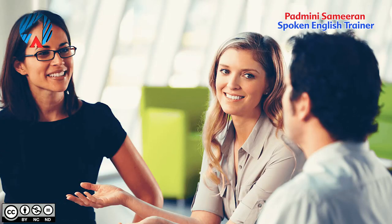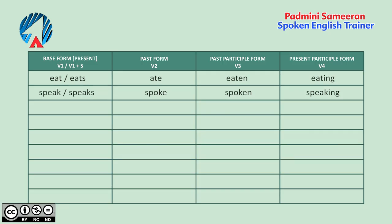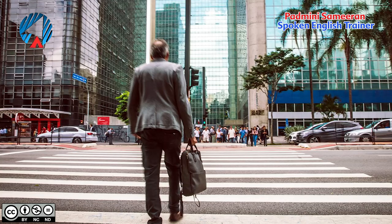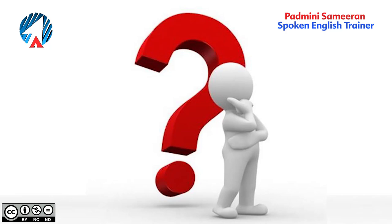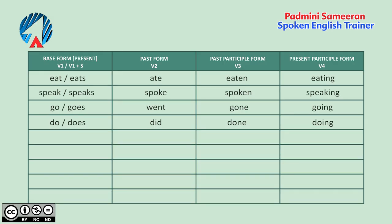When you know these four forms, it will be easy to choose the right word when talking about the present, past, or future. Let's look at more examples. 'Speak' — present forms are speak and speaks, past form is spoke, past participle is spoken, and the present participle is speaking. 'Go' — present forms are go and goes, past is went, past participle is gone, and present participle is going. 'Do' — present forms are do and does, past is did, past participle is done, and present participle is doing.